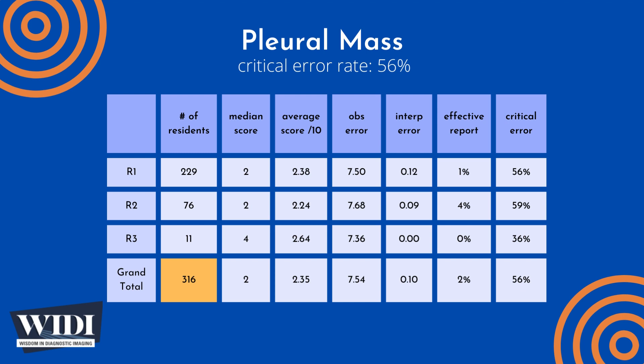316 residents interpreted this case of a pleural mass as one of 65 cases during an eight-hour simulated on-call shift, with a median score of 2 out of 10 and an overall average score of 2.35 out of 10. Overall, the average number of points lost out of 10 due to observational discipline was 7.54.